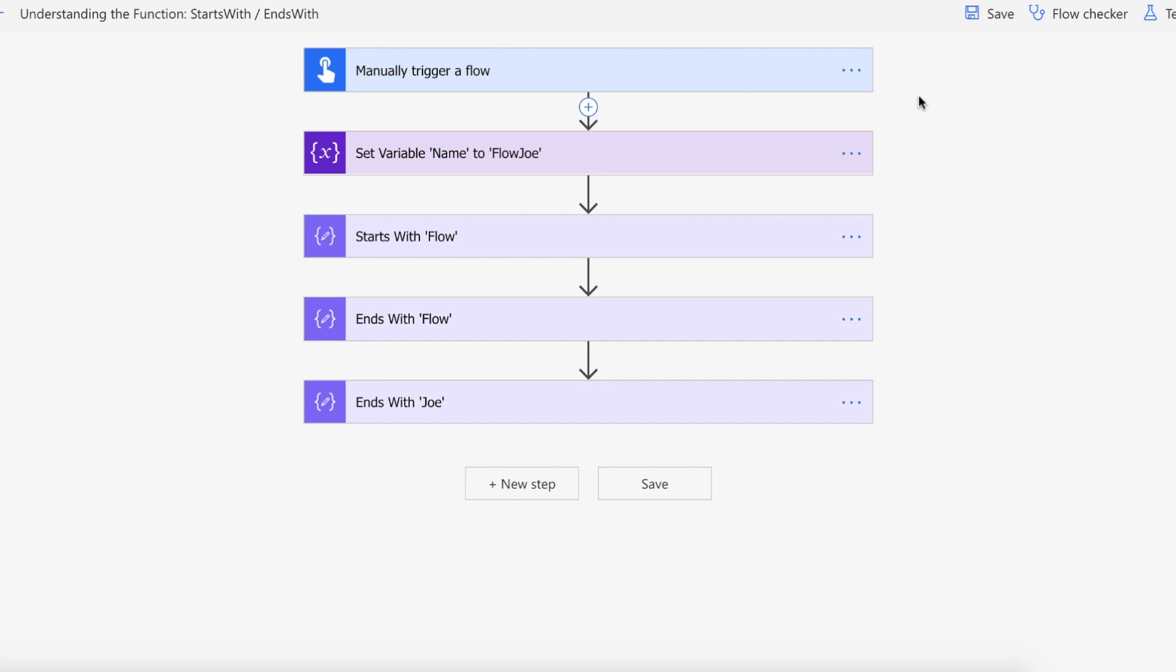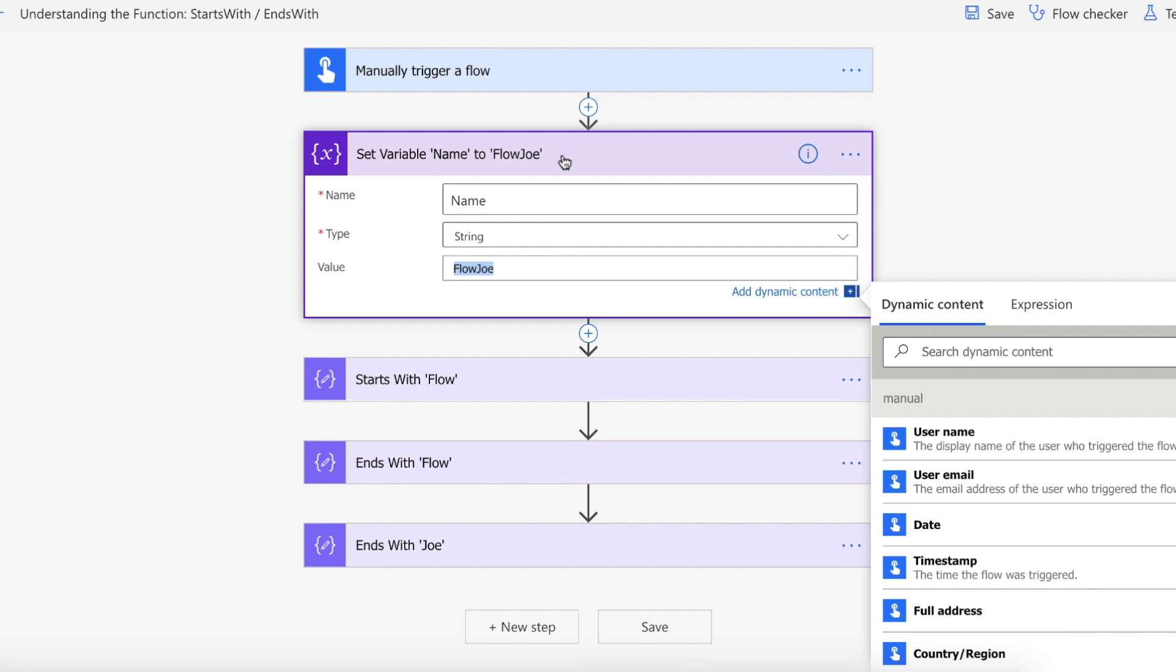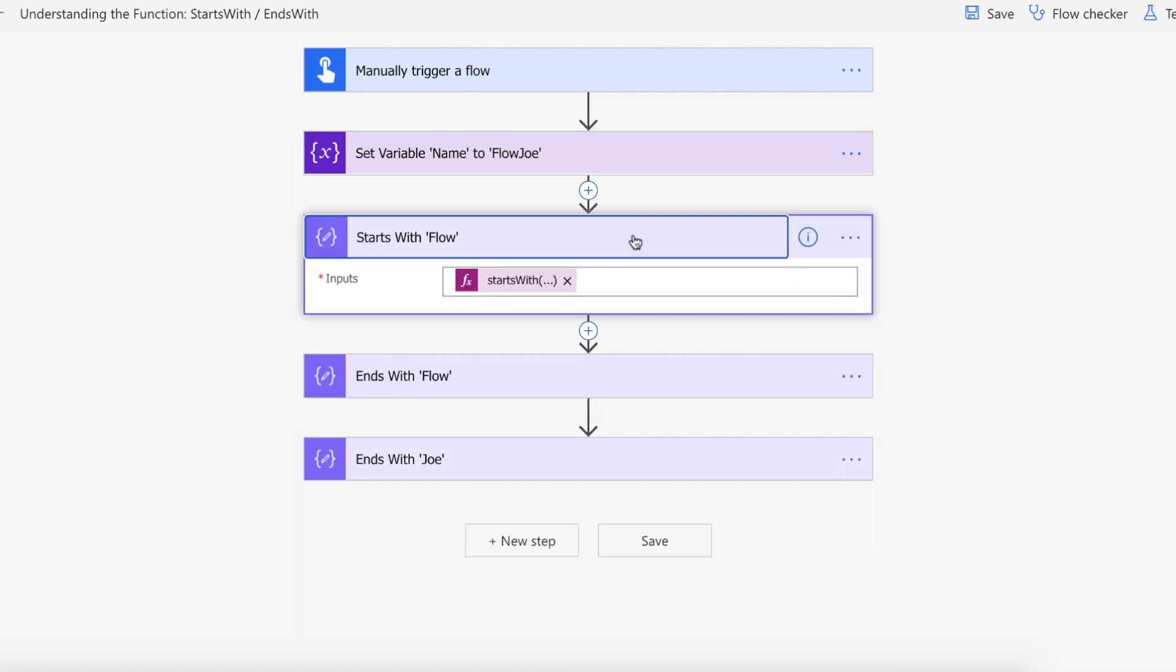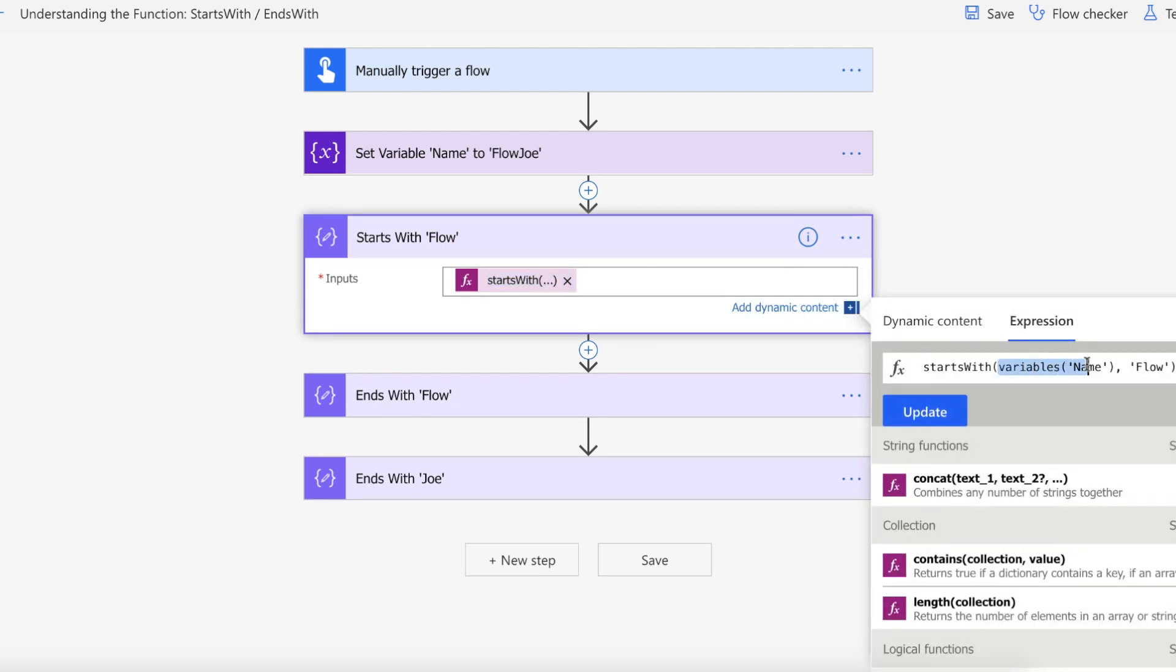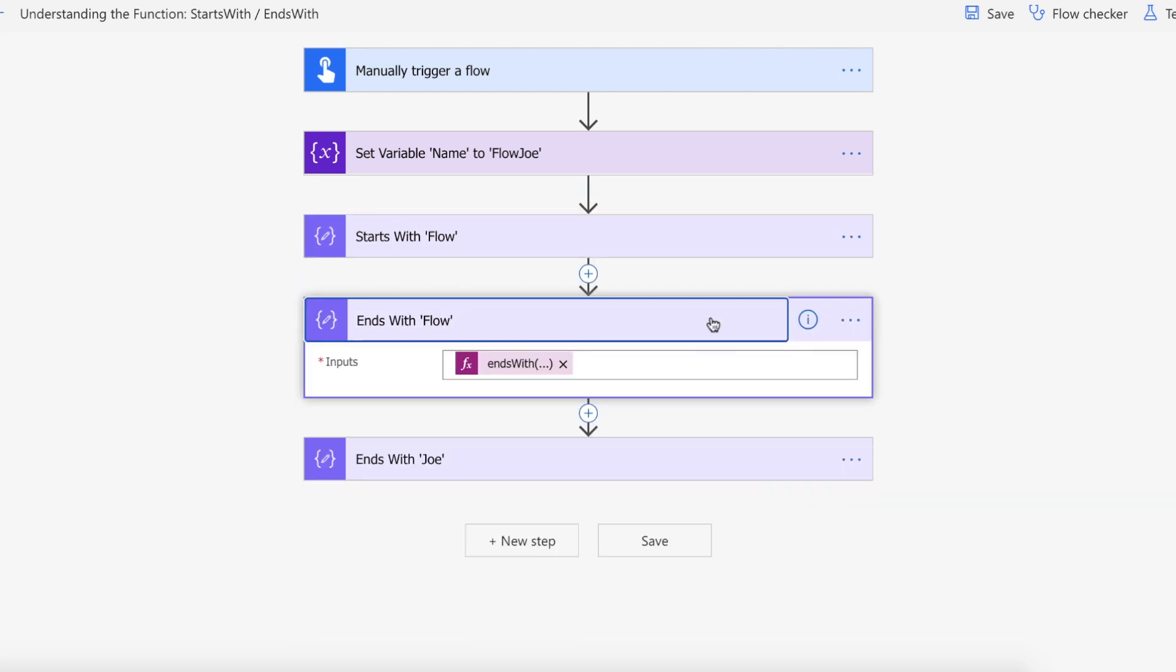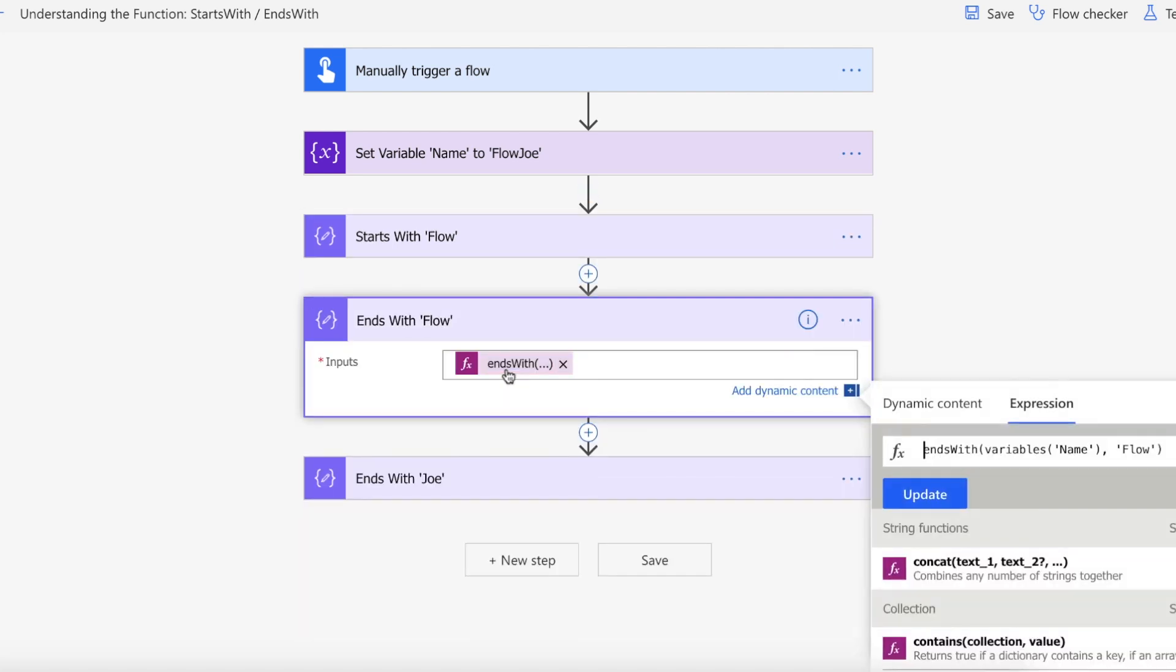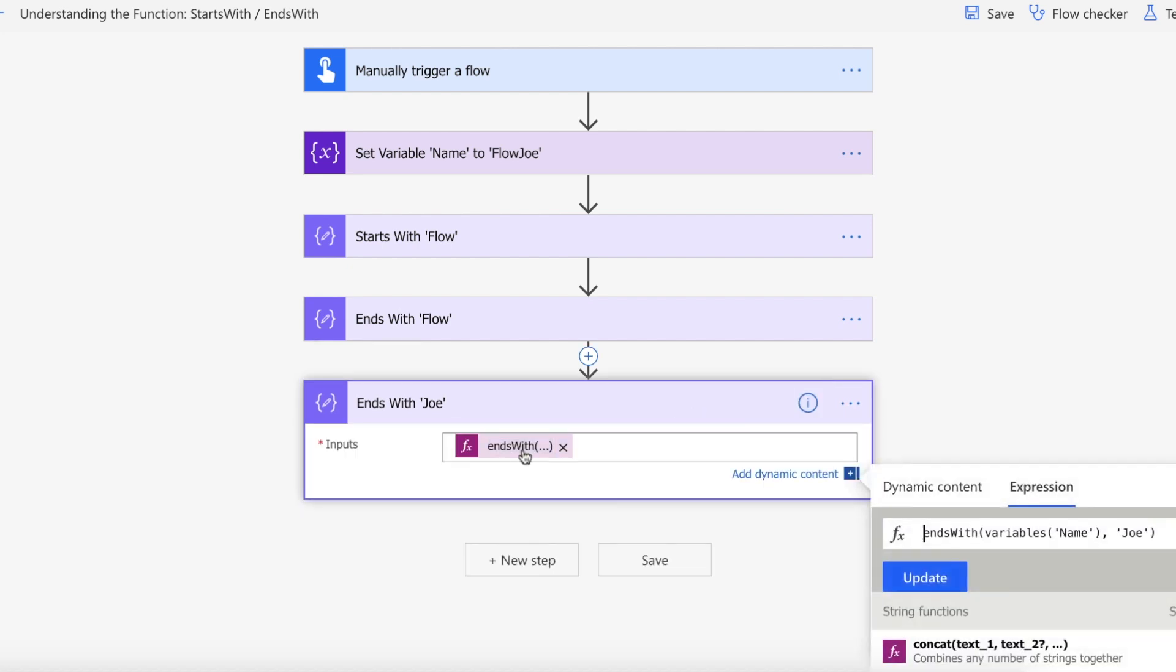What we have here is the variable NAME, passing in FlowJoe as the string. We're using the startsWith function, passing in the NAME variable and then 'Flow' because that's what we're looking at to be the start of FlowJoe. Then we're passing in endsWith with the NAME variable again, passing in 'Flow' to show you what happens when it's incorrect. Then we have a correct endsWith where we pass in 'Joe' instead of Flow.